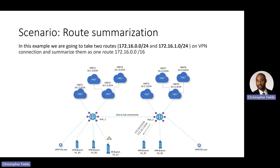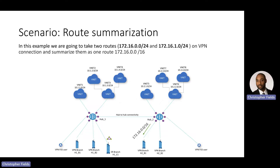Here's the scenario we're looking at today. We have a hub that's advertising two routes to a VPN branch site: the 172.16.0.0/24 and the 172.16.1.0/24. We're going to take those two routes and summarize them into one route, the 172.16.0.0/16. So we're going to go from this to this.